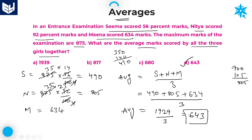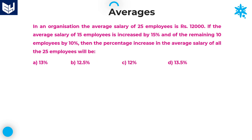Let's move on to the next question. This is very important — a little bit of calculation is involved. In an organization, the average salary of 25 employees is given as 12,000. If the average salary of 15 employees is increased by 15 percentage.